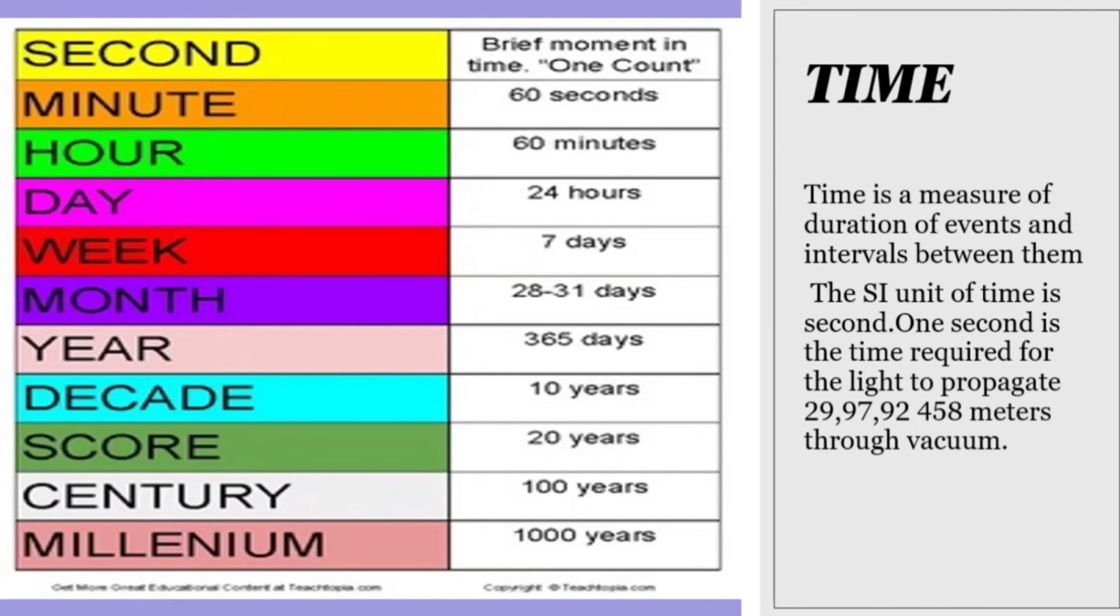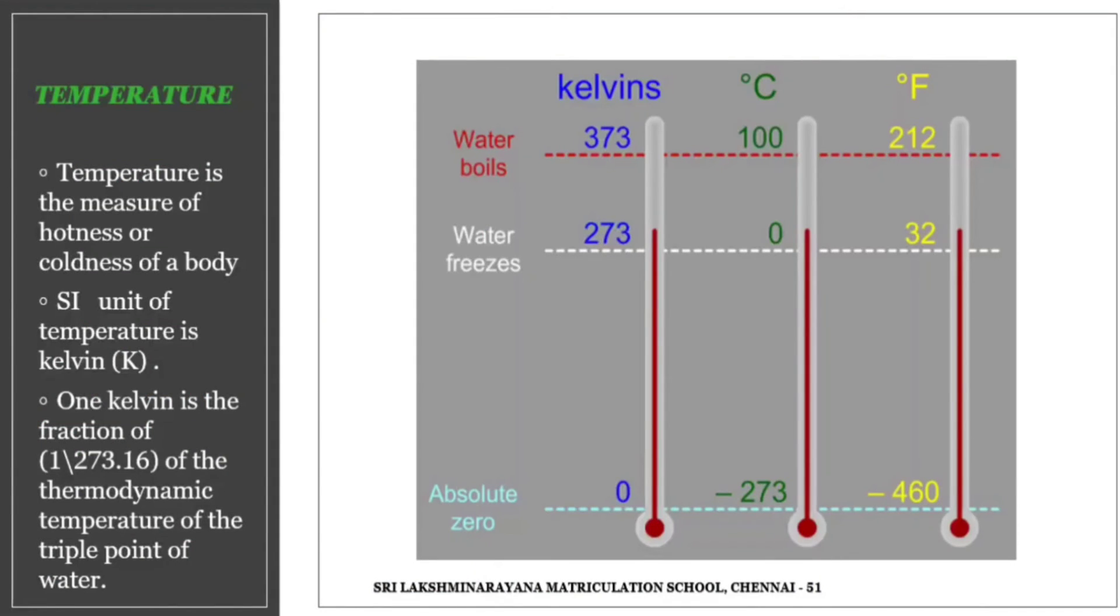Next, temperature. Temperature is the measure of hotness or coldness of a body. The SI unit of temperature is Kelvin, denoted as K. One Kelvin is the fraction of 1/273 of the thermodynamic temperature of the triple point of water. Zero Kelvin is commonly known as absolute zero.